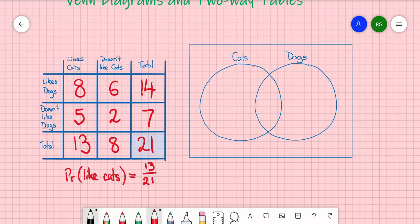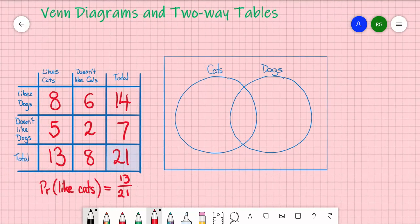What we do, when we do this, is we draw a big rectangle. The rectangle is important. And then, in this case, because we're talking about two different events, we've either got the liking or disliking cats and the liking or disliking dogs. The way it will work is we have a circle for the cats, for liking cats, a circle for the dogs. If you don't like either cats or dogs, you put a number outside of both circles, in this case, in the rectangle.